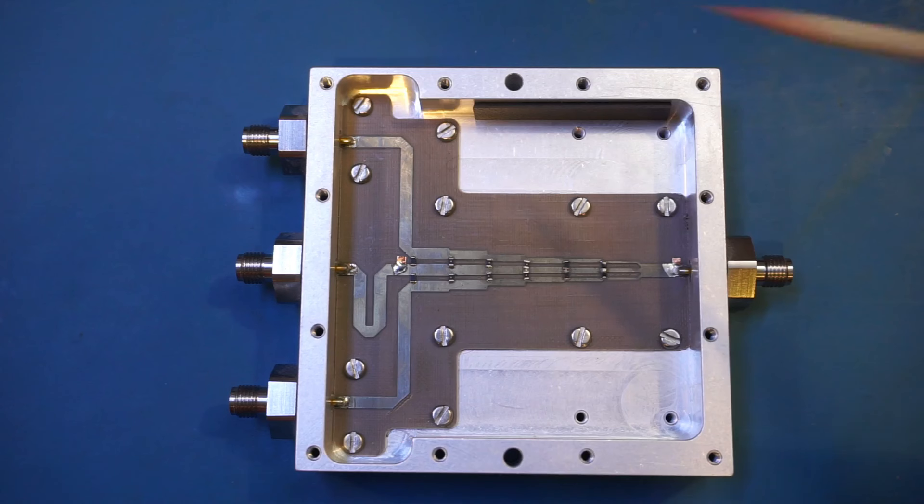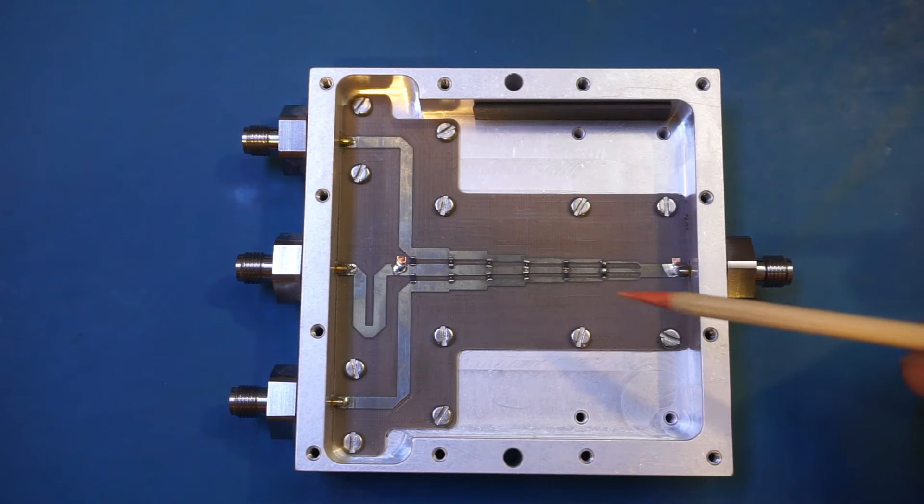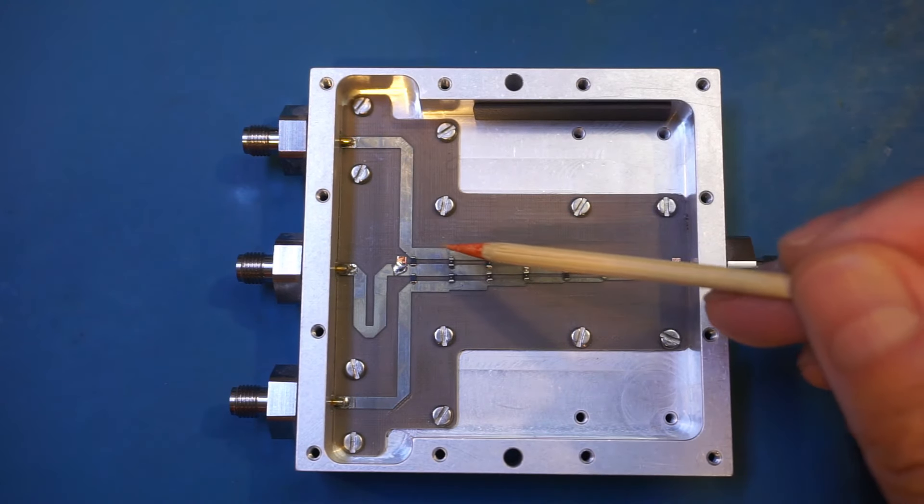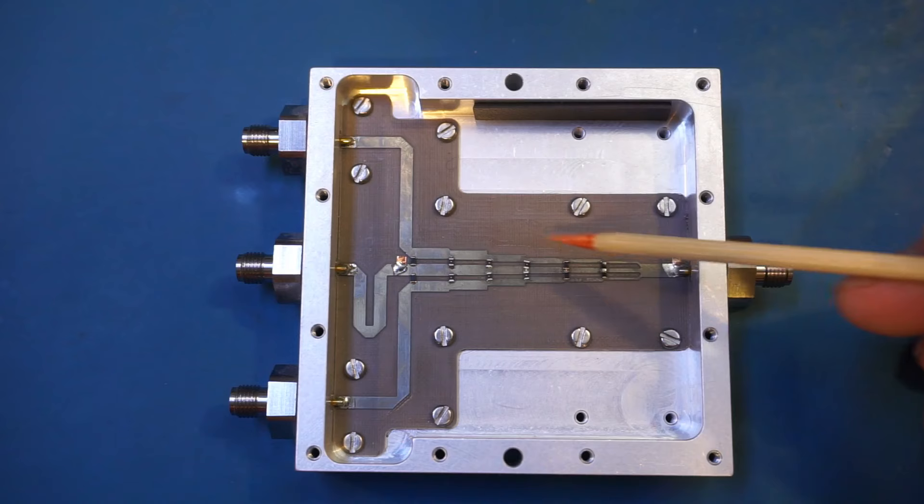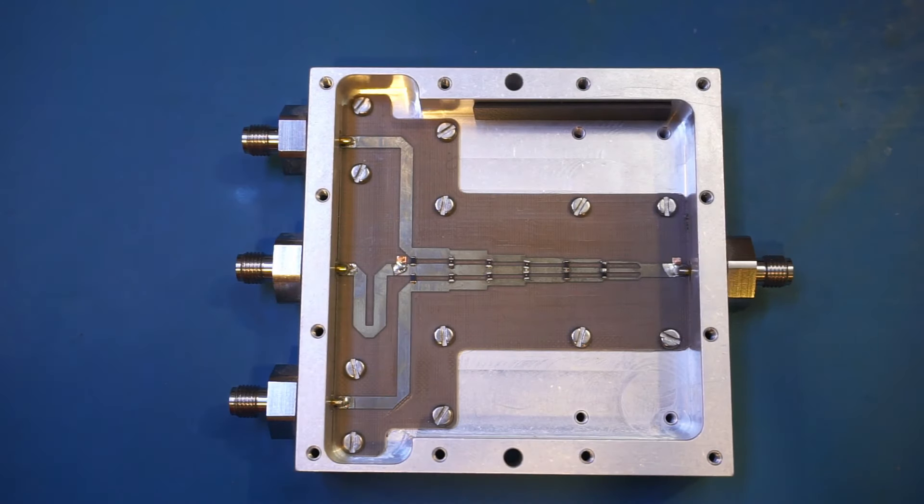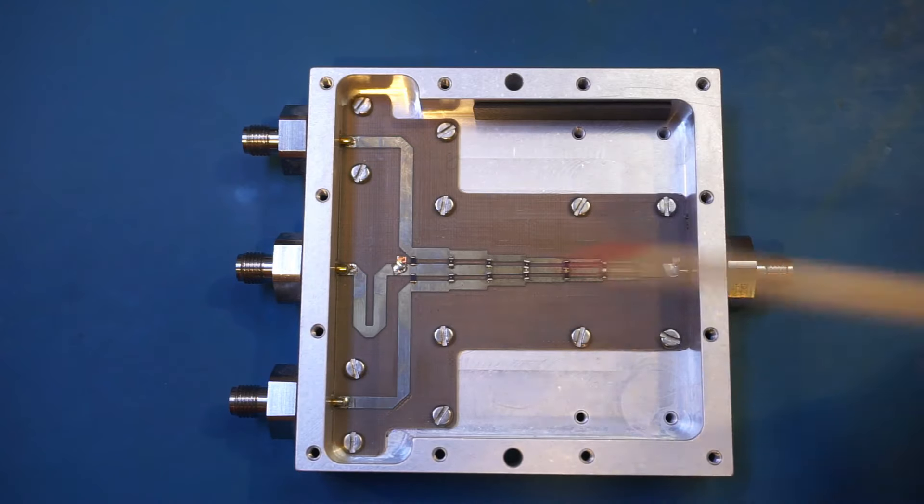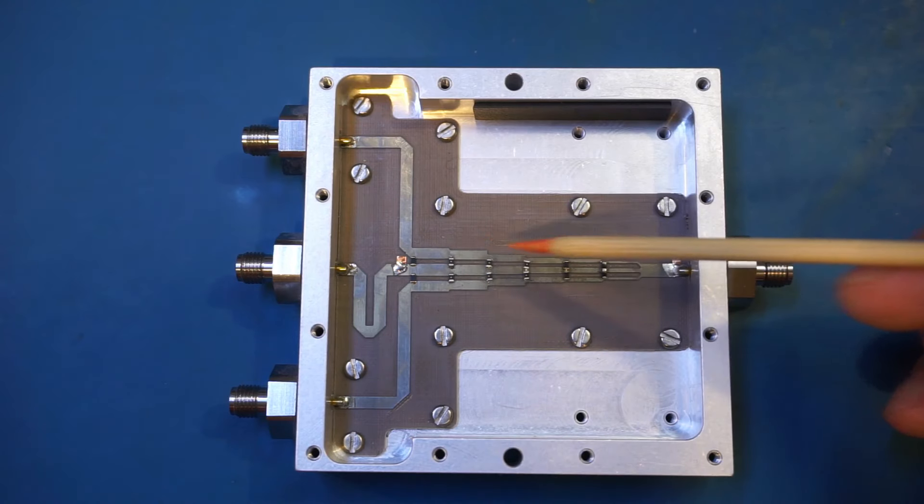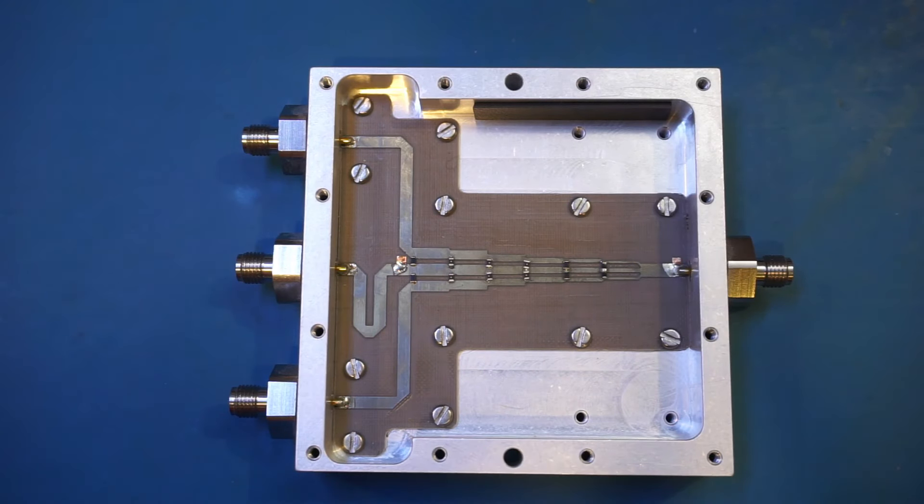Another technique used here is the gradual change of the transmission lines across different sections in terms of the width. You can see here this is wider than the following section and so on. In some designs you will see the lines themselves are tapered, which largely speaking serves the same purpose. But in this case these are discrete sections.